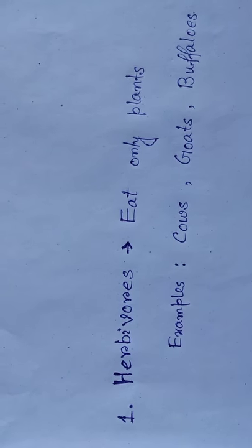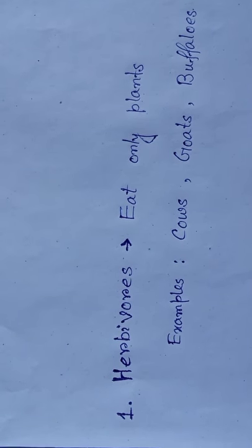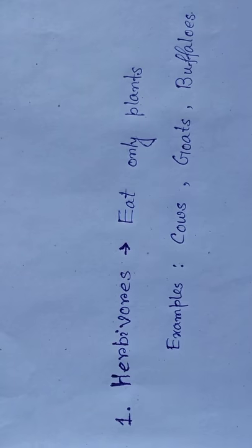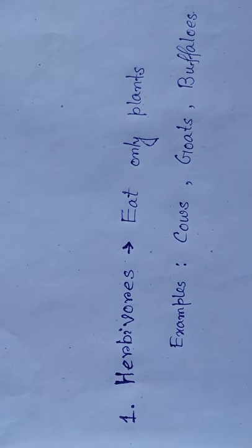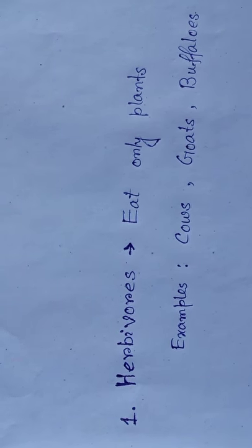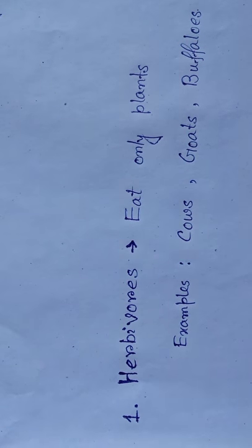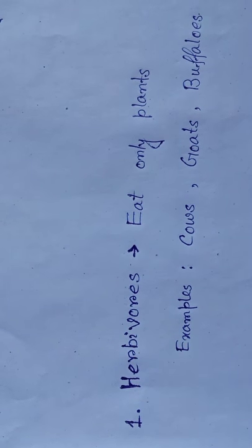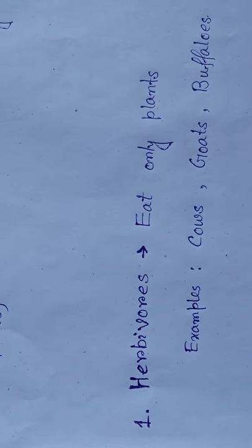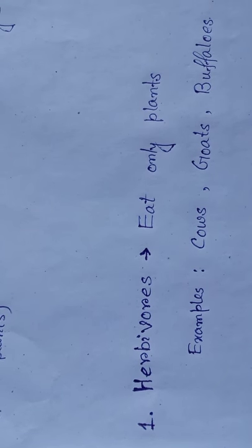Let us put the animals into groups according to their feeding habits. First is Herbivores. Cow, goat, giraffe, monkey and elephant eat plants or parts of a tree. Such animals are called herbivorous animals, or plant-eating animals.